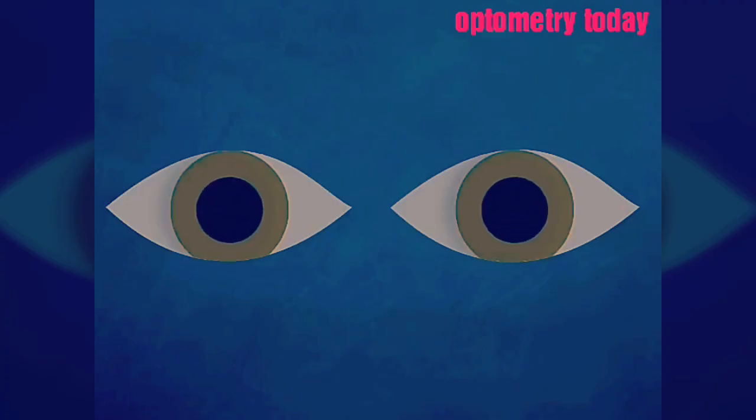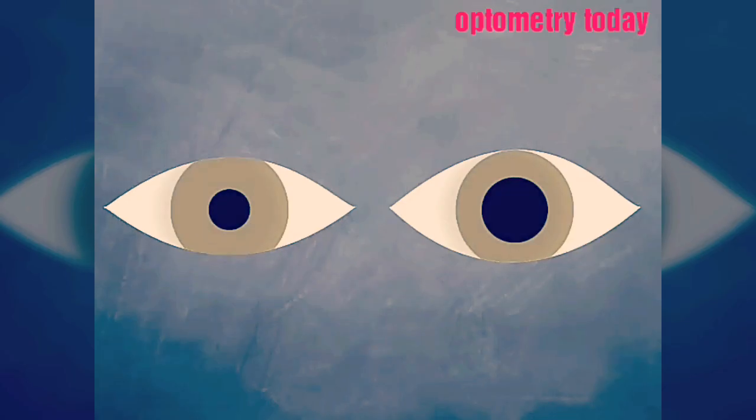Look for equal pupil sizes, and check again with the lights off. Anisocoria is not a feature of an afferent defect.